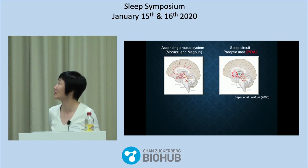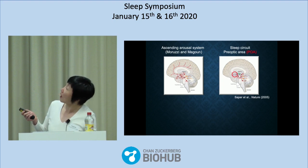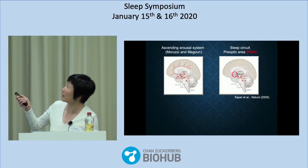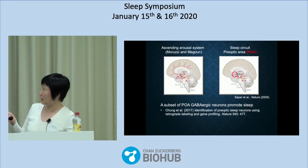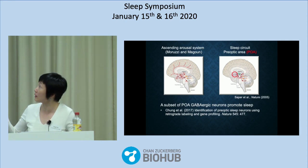But we know less about the sleep control mechanism. According to the textbook, there's a single sleep center in the mammalian brain — the preoptic area, POA — where a subset of neurons promotes sleep by inhibiting many of these wake neurons. Using retrograde labeling from some of these wake neurons, we were able to identify some of the sleep neurons in the POA.